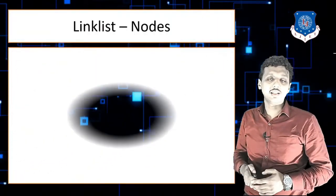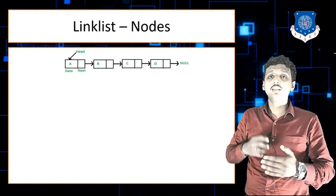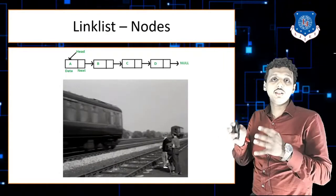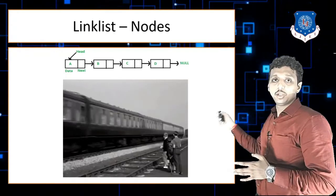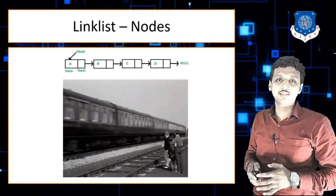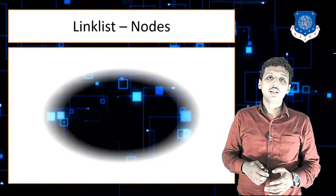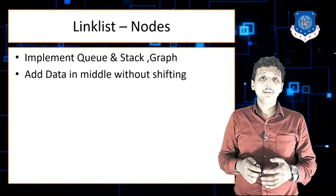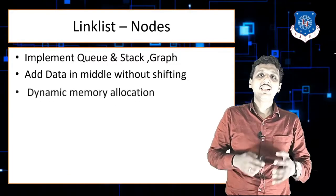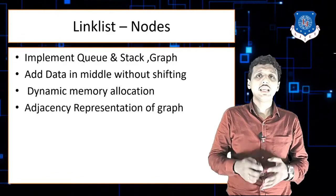The next is linked list. A linked list is a collection of nodes where each node contains two things: data and a pointer. A real-time example is a train, where each compartment is a node and the connection between two compartments is a pointer or link. Applications of linked list include implementing stack and queue, adding data in the middle without any hurdles, dynamic memory allocation, and adjacency representation of graph.